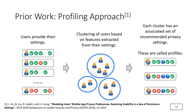A prior work also used the profiling approach that we used in our methodology. Profiling can be divided into three major steps. In the first step, users provide their settings — generally through large-scale surveys, but these can be collected through opt-in permissions management apps or large-scale crowdsourcing such as on Amazon Mechanical Turk. Next, these settings are clustered, with users grouped based on features extracted from their settings. Finally, each cluster has an associated set of recommended privacy settings called profiles.